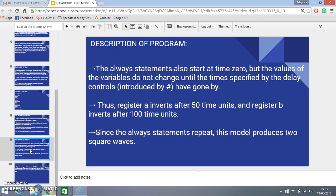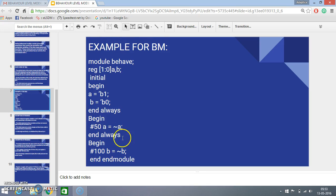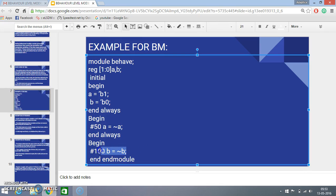Thus register A inverts after 50 time units and register B inverts after 100 time units as described in the program. Here B inverts after 100 time steps and A is described in a 50 time step process.